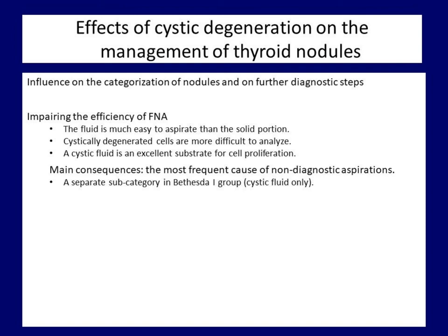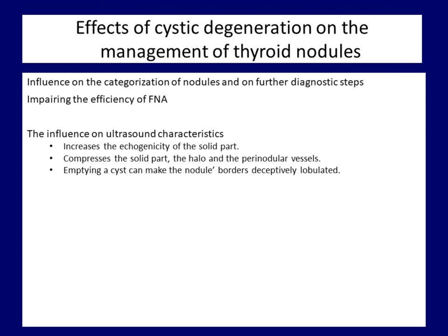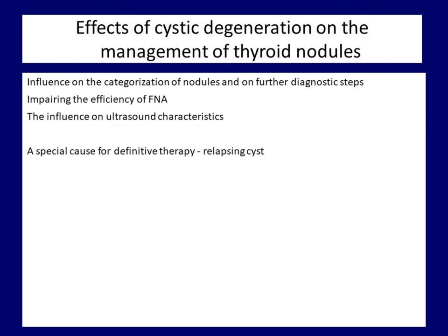There is a distinct subgroup in the non-diagnostic Bethesda category: in the 'cystic fluid only' category, the risk of malignancy is lower compared with other subtypes of non-diagnostic FNAs. The cystic fluid also has a non-negligible impact on the ultrasound presentation of the thyroid. The amplification of the echo signal dorsal to the fluid makes the appearance of the dorsal solid part deceptively more echogenic. Some mixed nodules cause compression of neighboring anatomical structures, and relief of compression after aspiration not infrequently makes nodule borders irregular or lobulated. Cystic nodules can also be treated very effectively with non-surgical methods, first of all with ethanol injection therapy.